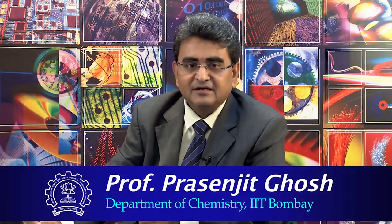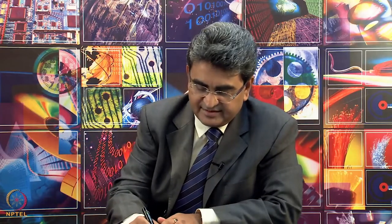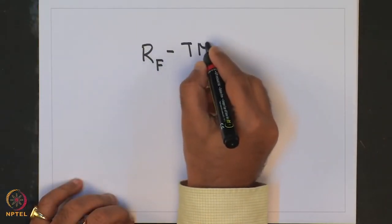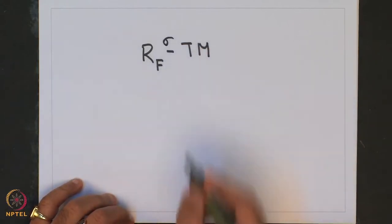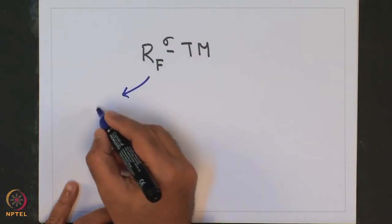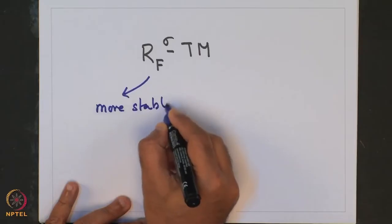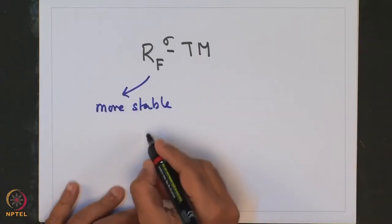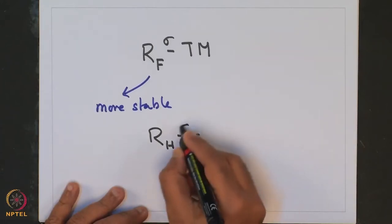we have been dwelling upon a very interesting topic on Transition Metal Per-Fluoroalkyl Sigma Complexes, which are involved in some kind of sigma interaction with the transition metals. These complexes show extra stability as compared to the corresponding Transition Metal Sigma Alkyl Complexes, designated by R-H sigma TM.